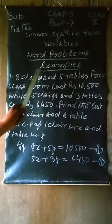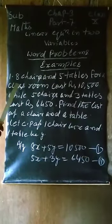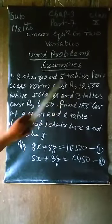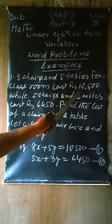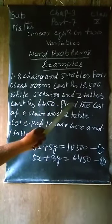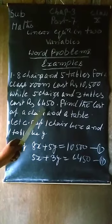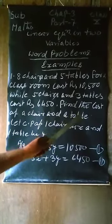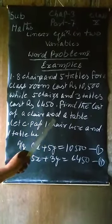First question: 8 chairs and 5 tables for a classroom cost rupees 10,500, while 5 chairs and 3 tables cost rupees 6450. Find the cost of a chair and a table.